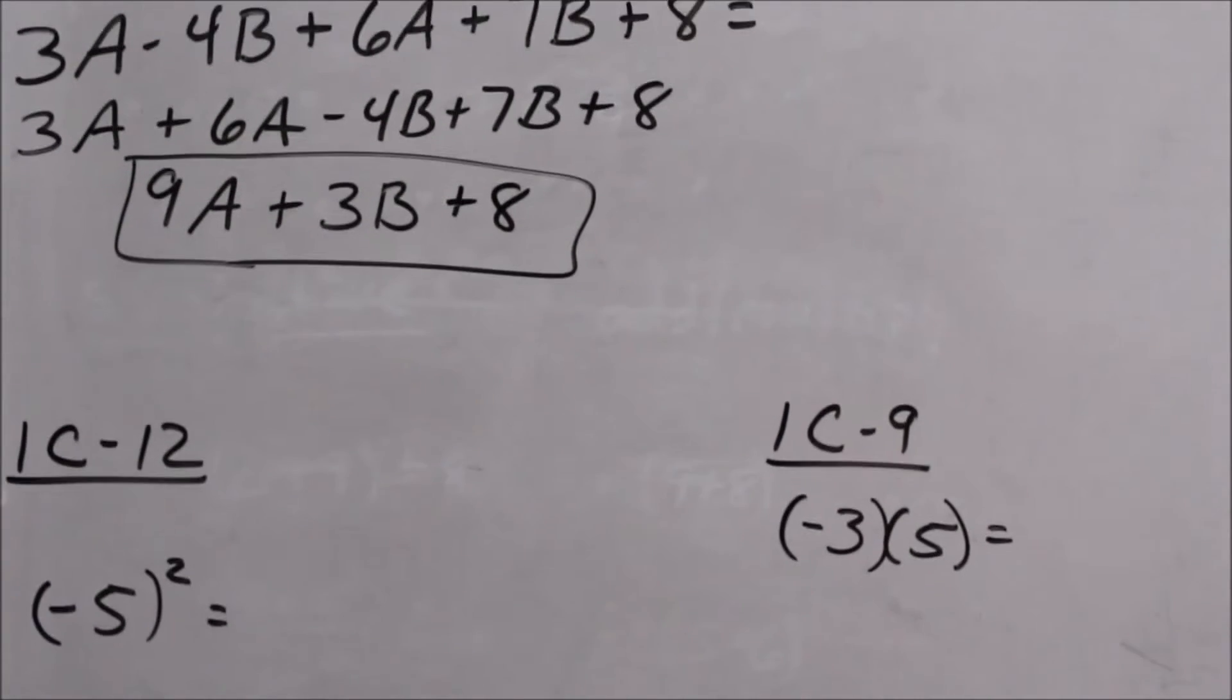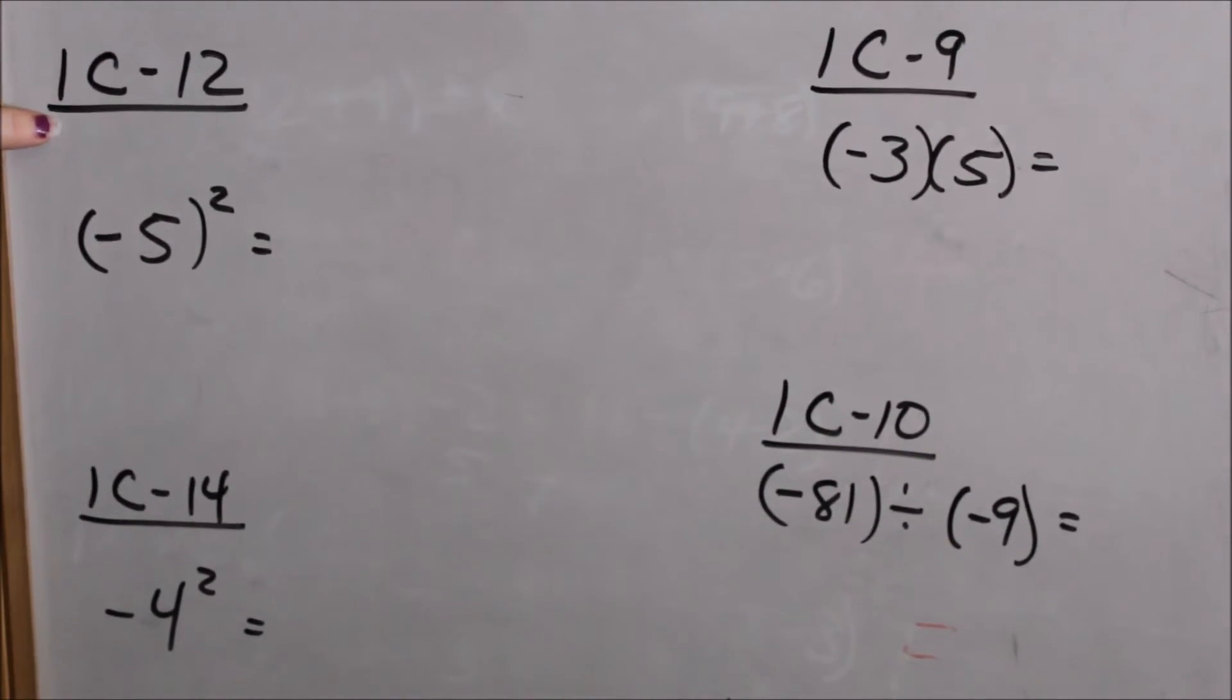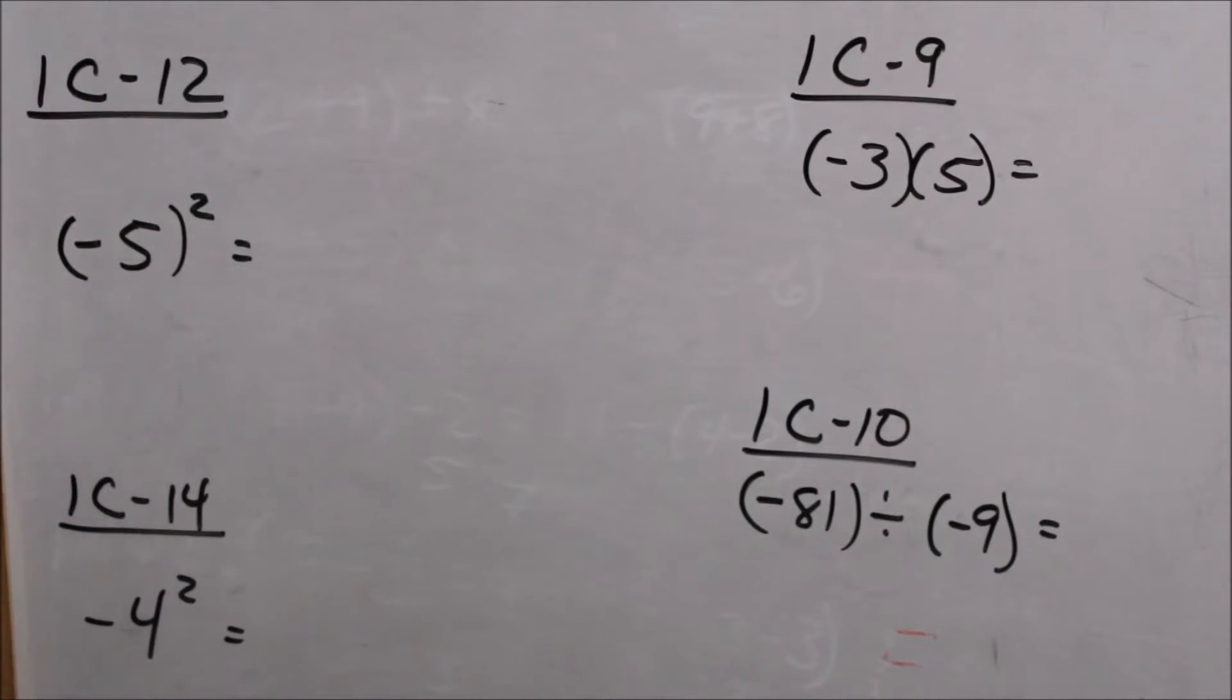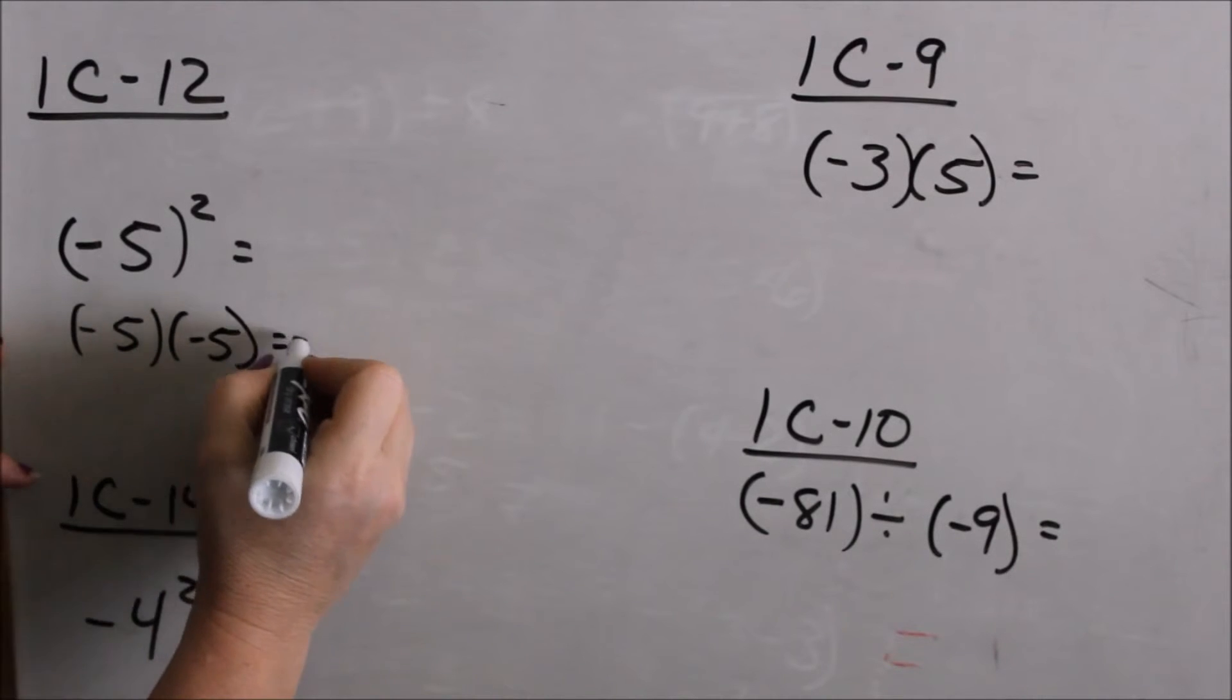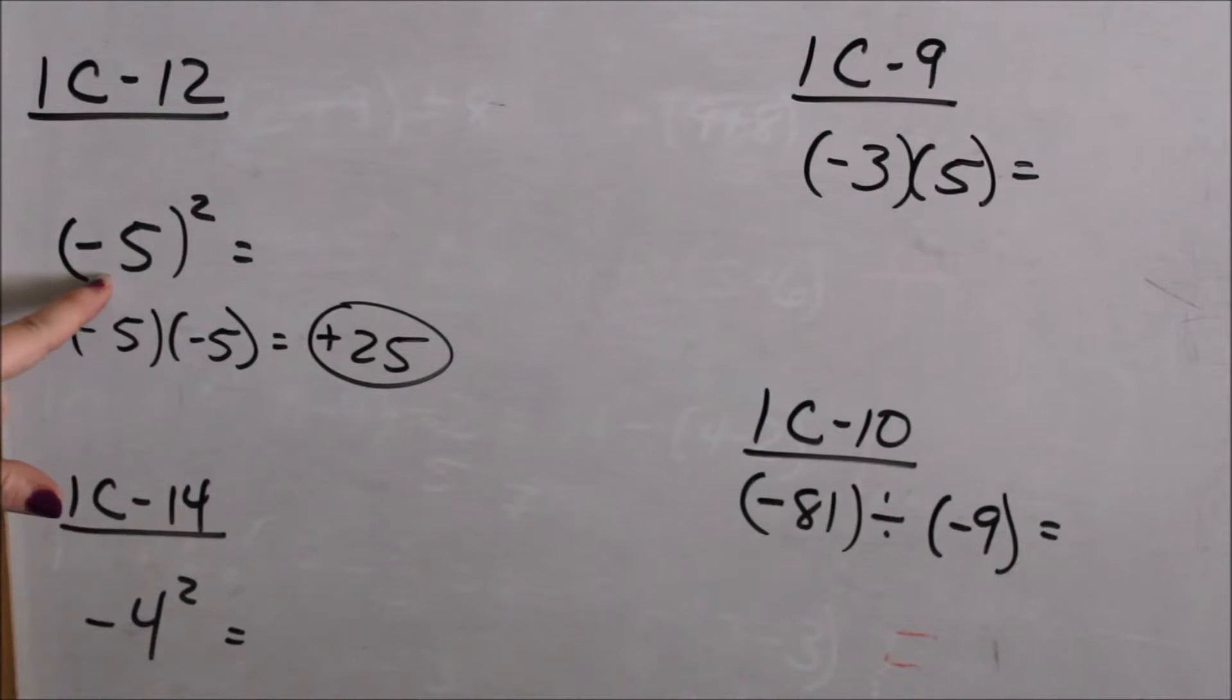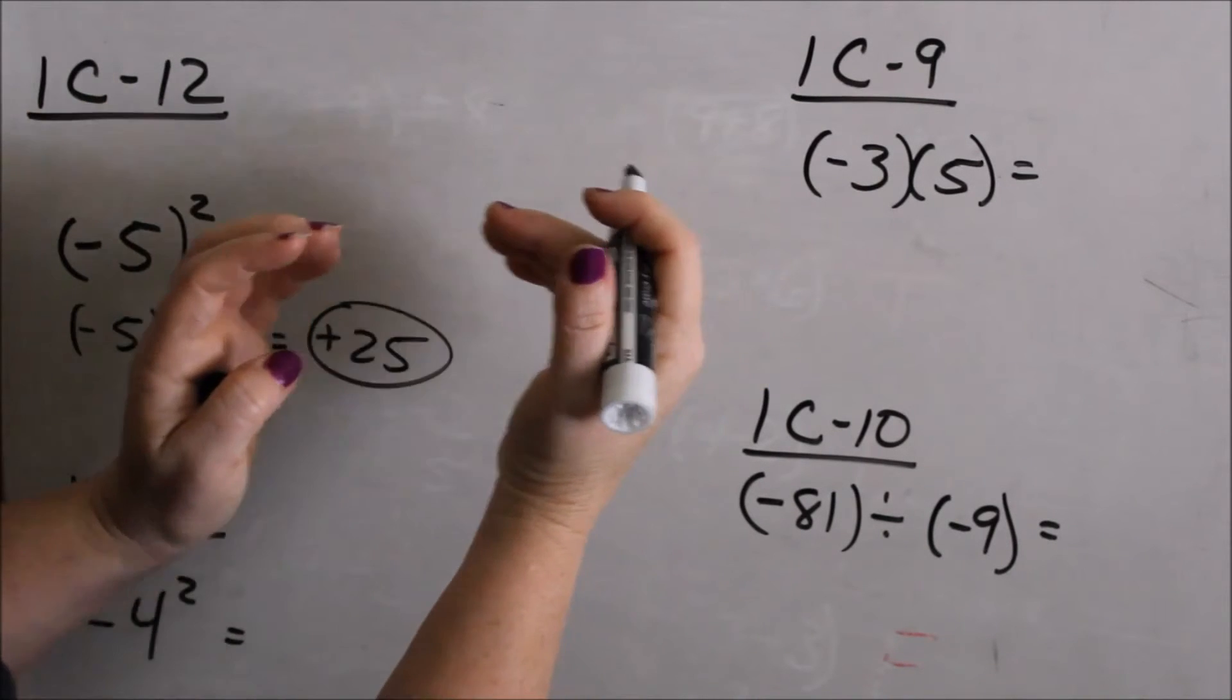Here's a review of exponents and with negative signs, looking at 1C12. You have a negative 5 with parentheses squared. When you have parentheses, that means that the whole thing is squared. It means negative 5 times negative 5, because squared means anything times itself. A negative times a negative is a positive, and therefore that would be a positive 25. So when you have a negative 5 squared, I like to show this. It's the whole parentheses times the whole parentheses.